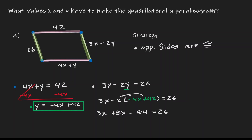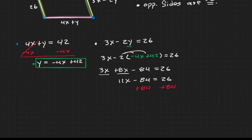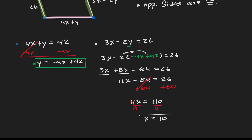Now let's combine like terms. We have 8x and 3x, which gives us 11x minus 84 equals 26. Adding 84 to both sides, the 84s cancel, leaving 11x equals 110. Dividing by 11, we find that x has a value of 10.